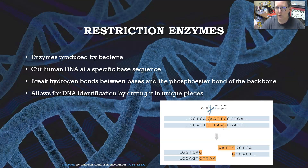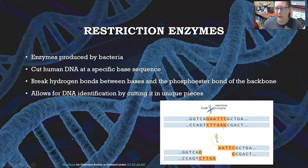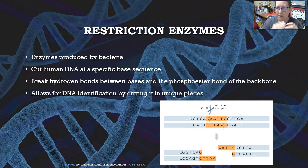By cutting DNA from one location and another with the same restriction enzyme, the ends are compatible and can stick back together. This is essentially how gene splicing works — you can add genes from one organism's genetic material into another's.